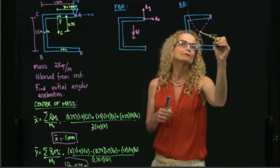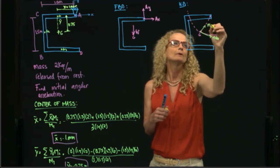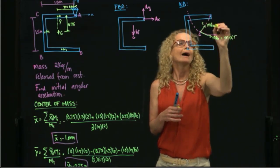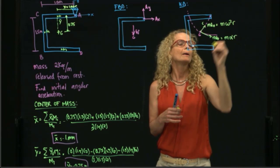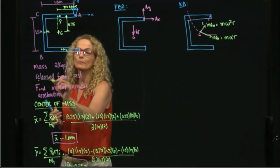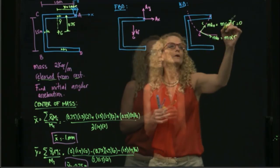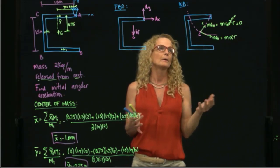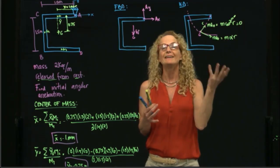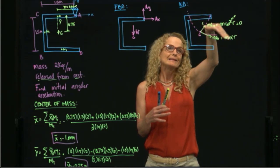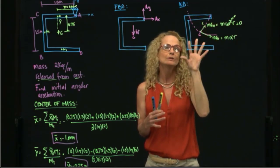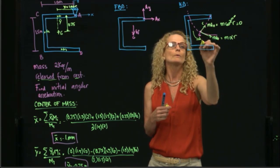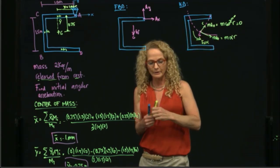We have a tangential acceleration and a normal acceleration. The tangential acceleration is mass times alpha times r, and the normal is mass times omega squared times r. Since the bar is released from rest, omega equals zero, so the normal acceleration is zero. We don't have angular velocity at that instant. For the initial moment, we have Ig times alpha because we are rotating about point A.